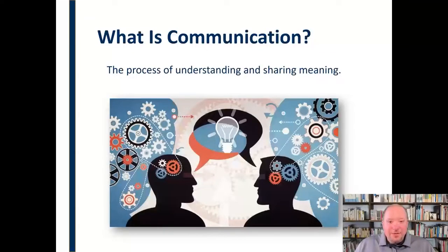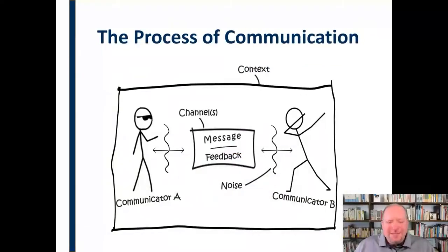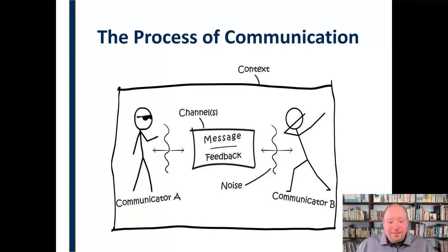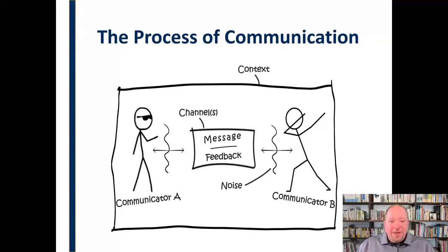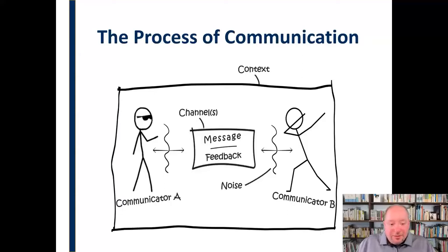As you may know from previous studies, there's a particular process that takes place in communication. We have a whole other video on this that you can check out if you want the details. But basically, these are the elements of the communication process. Communicator A has a message they want to send to Communicator B, and they communicate that message through a particular channel — that's the method through which it's communicated. Communicator B is also communicating in return, providing feedback, creating a constant expression between the two, with the message and feedback going back and forth at all times.